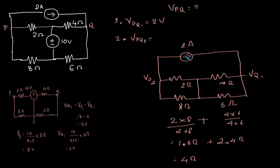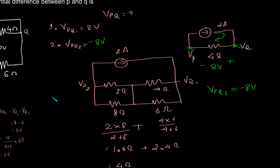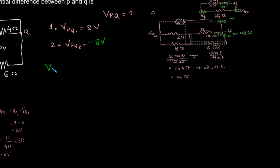With 2 ampere flowing through the 4 ohm equivalent, it develops a potential of 2 × 4 = 8 volts, so vpq2 = minus 8 volts. According to the superposition theorem, vpq = vpq1 + vpq2 = 2 + (−8) = −6 volts.